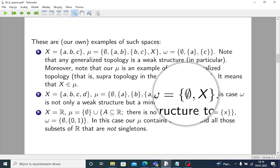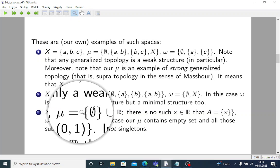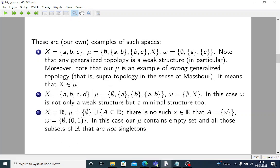In particular, in fact, it is a minimal structure. But of course, each minimal structure is a weak structure too. This is obvious. Another example: we have real line.